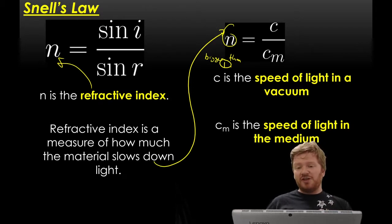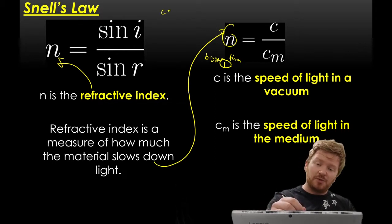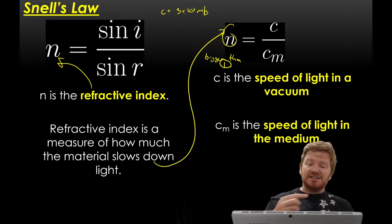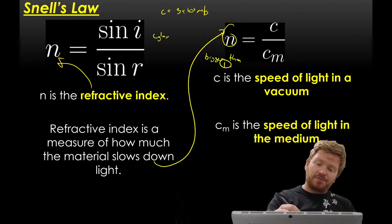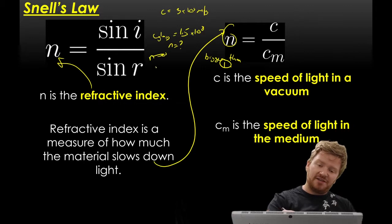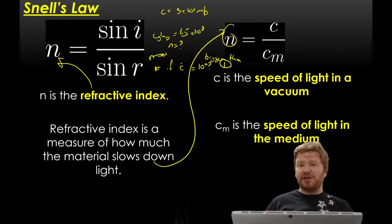Now we're going to do loads of practice of that in the lesson. For now, you just need to be able to use these two equations. C is always, by the way, 3 times 10 to the 8 meters per second. If I said C of glass was 1.5 times 10 to the 8, I might ask you, could you find me n first of all? And then I might say, what is the angle of refraction if the angle of incidence is 10 degrees? I won't do that now, we'll do that in the lesson, but maybe pause this video and have a go at that.